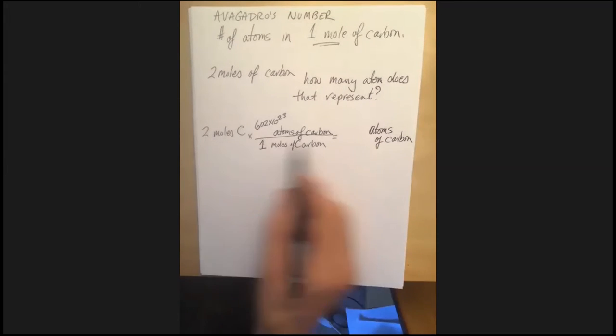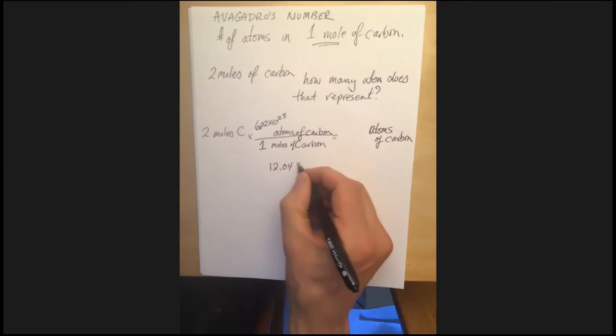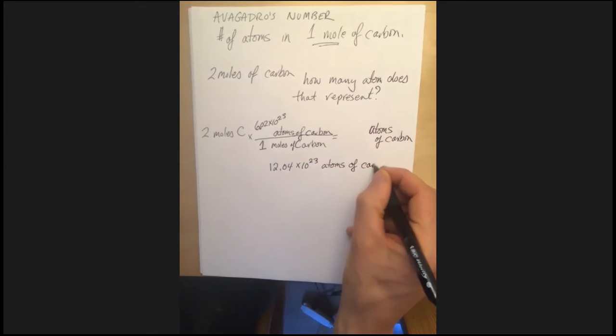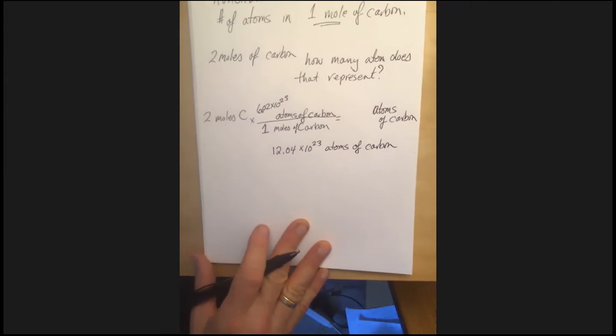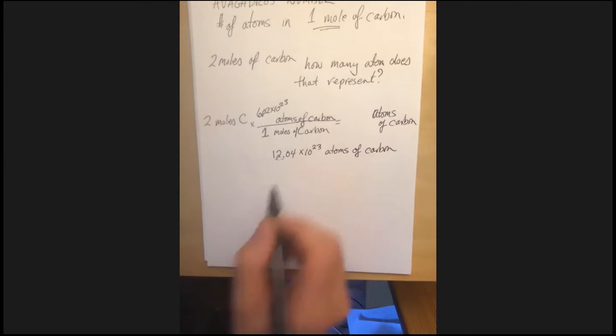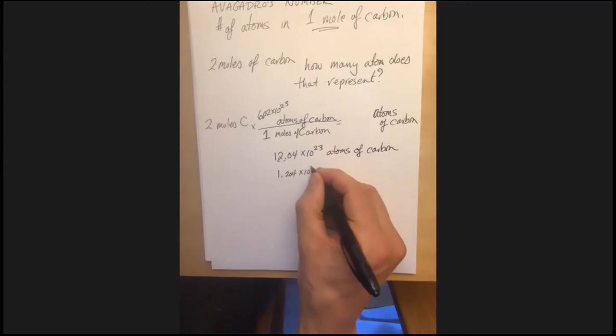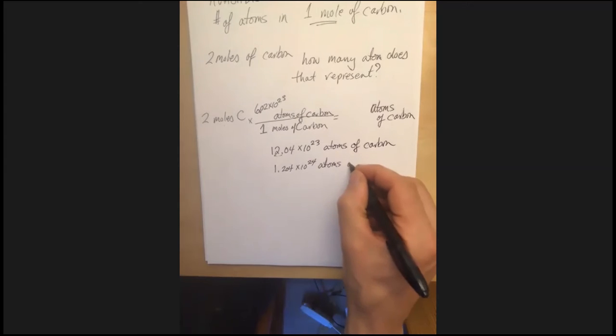And that will tell me that in two moles, I'm going to have 12.04 times 10 to the 23rd atoms of carbon. Which we probably wouldn't leave it written that way, we probably wouldn't leave it written in scientific notation. We'd want to move this decimal place over to get the 1.204 times 10 to the 24th atoms of carbon.